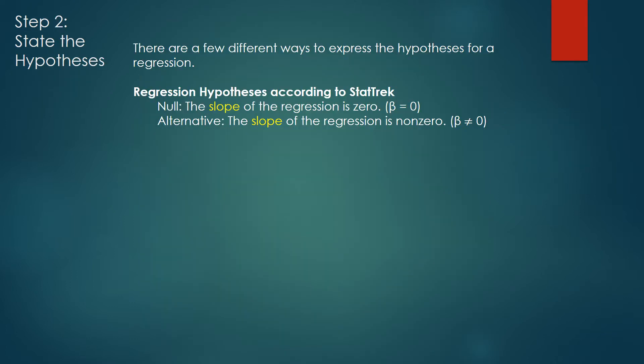The required reading showed you a few different ways to state the hypotheses for a regression analysis. The first way to state it is right here. This is basically the test of whether beta is equal to zero or beta is not equal to zero.